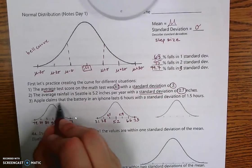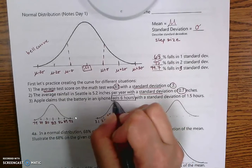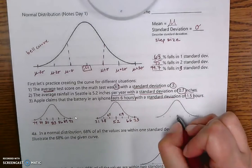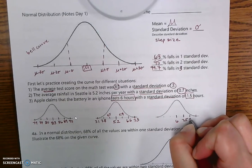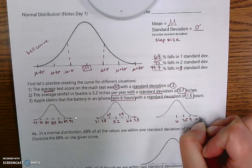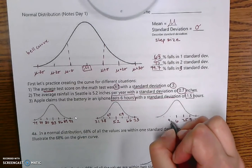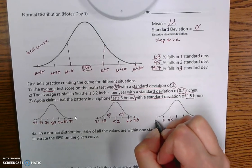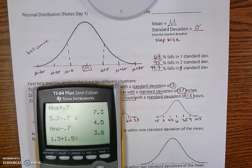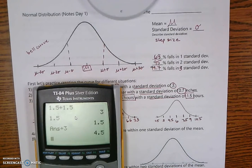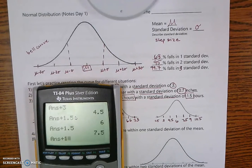You try the last one: Apple claims that the battery of an iPhone lasts 6 hours, with a standard deviation of 1.5 hours. In the middle we put 6, we count up by 1.5, and we count down by 1.5. I'm going to check to make sure I did it right: 3, 4.5, 6, 7.5. Good — I just wanted to check my math. That's how I create a bell curve.